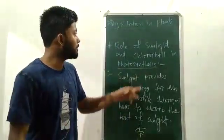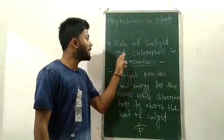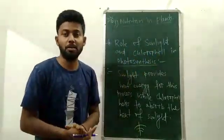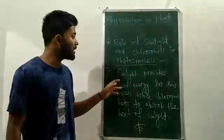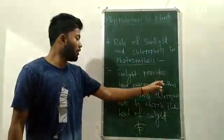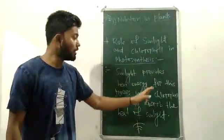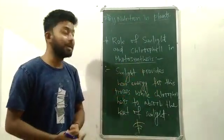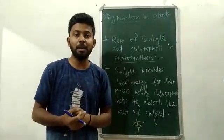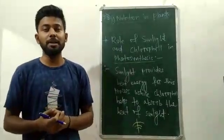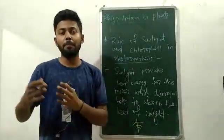Now we have what is the role of sunlight and chlorophyll in photosynthesis. In photosynthesis, sunlight provides heat energy for this process while chlorophyll helps to absorb the heat of sunlight. Chlorophyll is responsible for using heat in the plant.